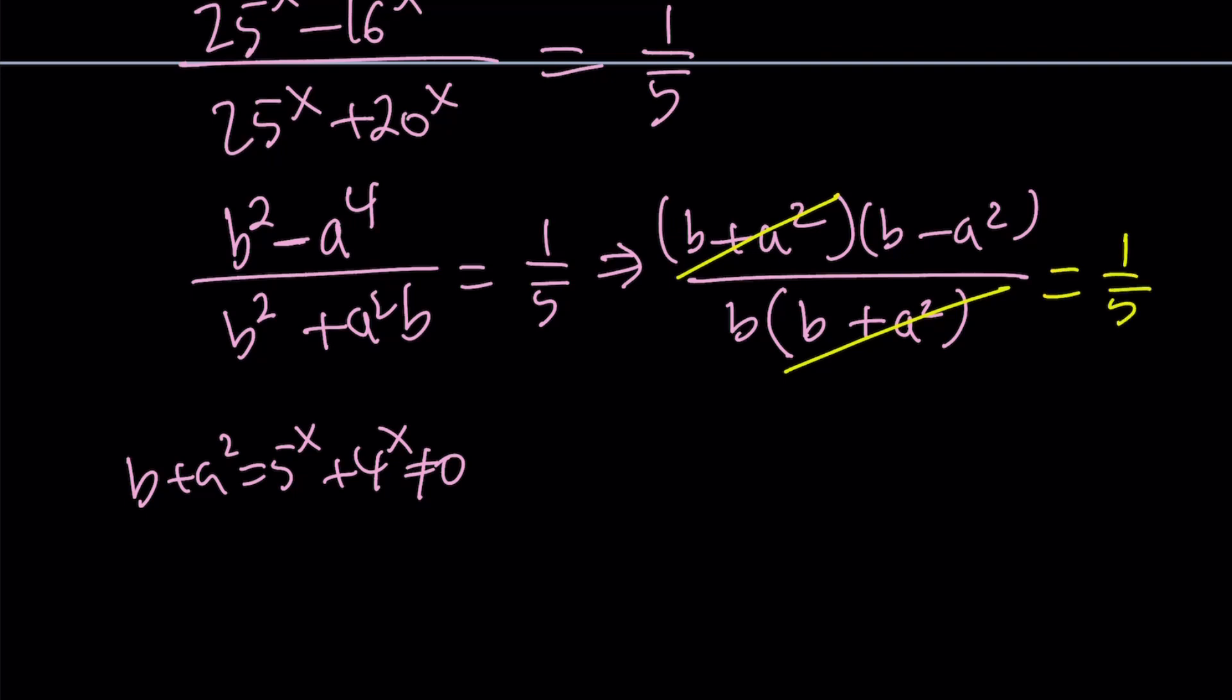Now let's go ahead and do some cross-multiplication. 5 times b minus 5 times a squared equals 1 times b, which is b. And from here, we get 4b equals 5a squared.